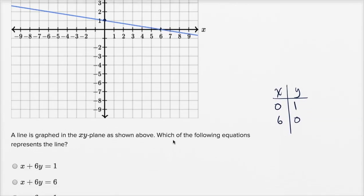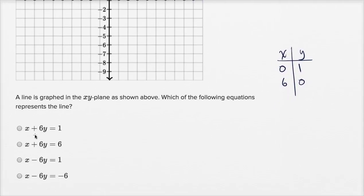So a very basic way of approaching this is to see when x is zero, y needs to be equal to one. When x is zero, we get six y is equal to one. Well then y is going to be equal to one-sixth. Rule that one out.